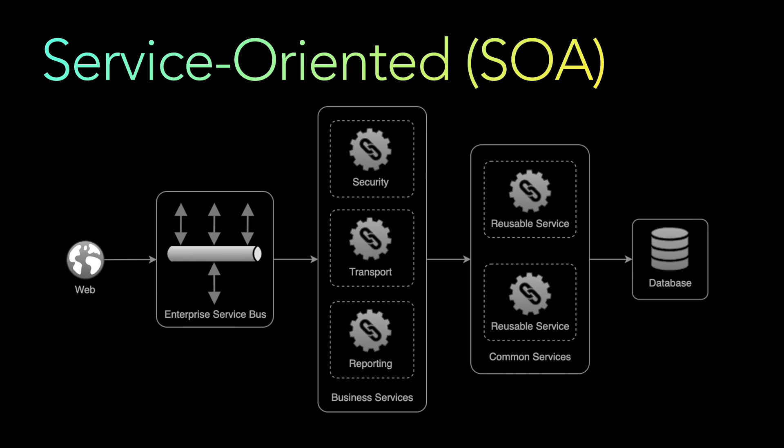From monolithic architecture, the next architecture that came was the service-oriented architecture. Service-oriented architecture evolved from monolithic architectures and designs the application based on different business functionality and common reusable services, which are interoperable via service interfaces. There are still service-oriented architectures in use today.